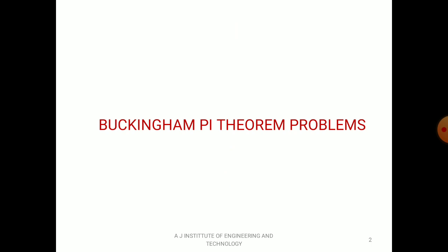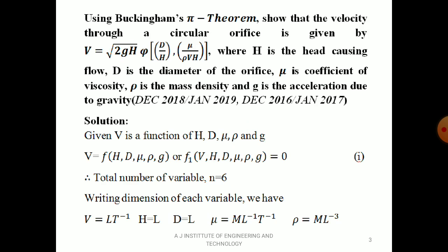The syllabus topic is Buckingham Pi theorem problems. The first problem: using Buckingham's Pi theorem, show that the velocity through a circular orifice is given by V equal to square root of 2GH times phi of D/H and μ/(ρVH), where H is the head causing the flow, D is the diameter of the orifice, μ is dynamic viscosity, ρ is mass density, and G is acceleration due to gravity. This was asked in December 2018, January 2019, December 2016, and January 2017.